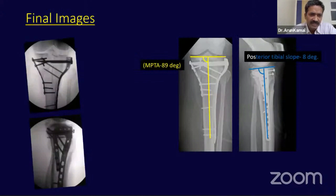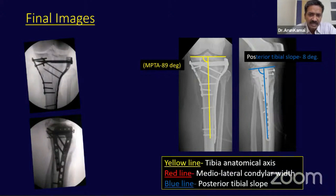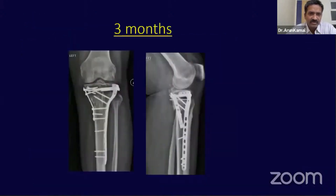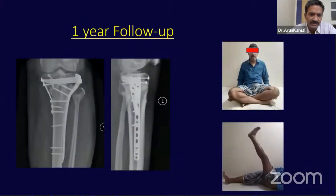The final intraoperative image showed reasonably good articular reduction. The medial proximal tibial angle was 89 degrees, the posterior slope was 8 degrees, and the condylar red line — indicating condylar widening — was also restored. At three months and one-year follow-up X-rays, the outcome was good.